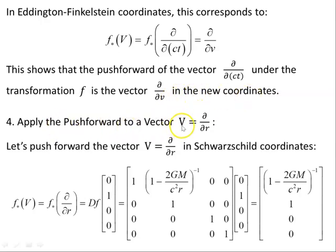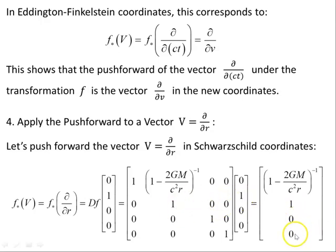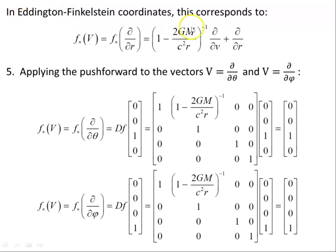Let's apply the push forward to another vector from the Schwarzschild manifold M: v = ∂/∂r. In component form this is the column vector (0, 1, 0, 0). f★(∂/∂r) is the Jacobian of f times that vector. When we do that multiplication, we get ∂r★/∂r in the first place and 1 in the second place, with 0s elsewhere. So on manifold N, this vector from manifold M becomes this new vector in Eddington-Finkelstein coordinates, corresponding to f★(∂/∂r) = (∂r★/∂r)∂/∂v + ∂/∂r.